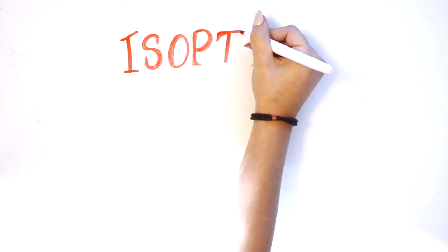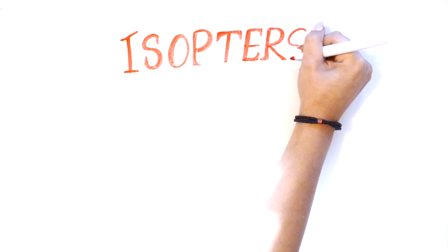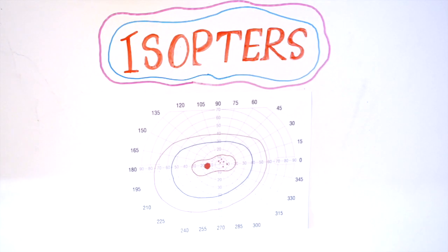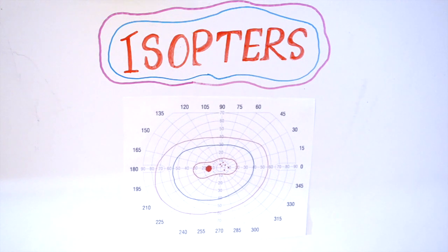An isopter is an area or line of equal vision or sensitivity. You need a minimum of two different stimuli to judge the presence or absence of an absolute scotoma, however three isopters are normally ideal.